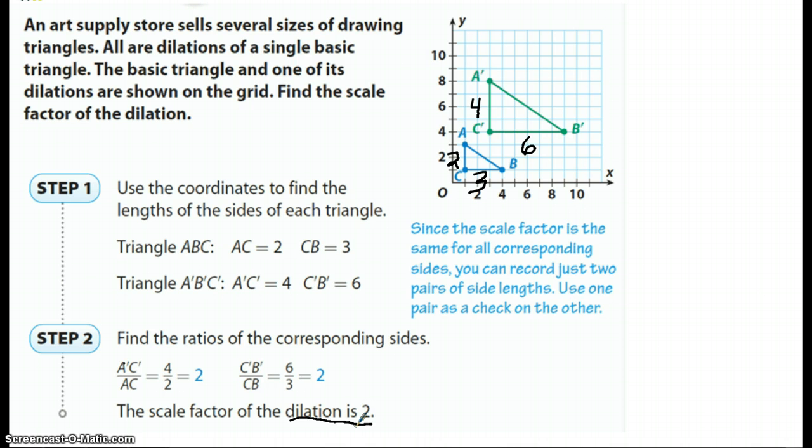Now, here's a little note here in blue that I think that you probably need to take a look at. It could be a little helpful. It says, since the scale factor is the same for all corresponding sides, you can record just two pairs of side lengths. Use one pair as a check of the other. So we could have just did A prime and C prime, but you want to make sure that you check with the other two.